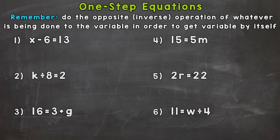Now up top, I have a hint we need to remember as we go through these problems. So we're going to do the opposite or inverse operation of whatever is being done to the variable in order to get the variable by itself. Now that may not make any sense at first, but as we go through these problems, you'll start to see what I mean by that.